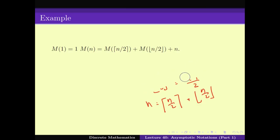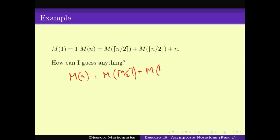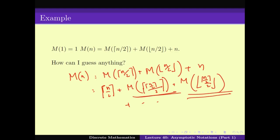Now can we guess them? Can I guess anything? One technique is to unfold it. Let us try to unfold it. M(n) equals M(⌈n/2⌉) + M(⌊n/2⌋) + n, which is again I can write this one as M(⌈⌈n/2⌉/2⌉) + M(⌊⌊n/2⌋/2⌋) + n plus something. Already as you can see this expression is becoming very ugly, not much that we can do about it. The reason is that we cannot simplify this.